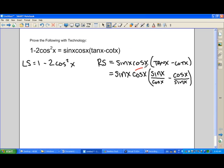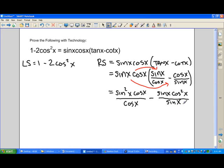And then I'm going to distribute into the brackets the sine x cos x term. So I'll have sine squared x times cos x over cos x minus sine x cos squared x over sine x.